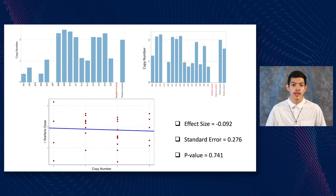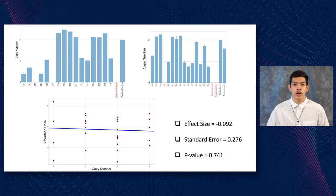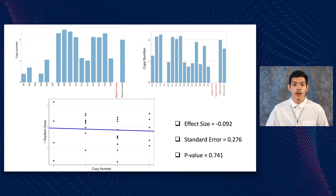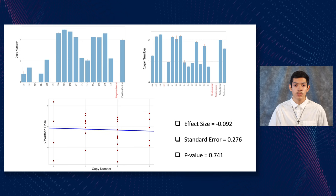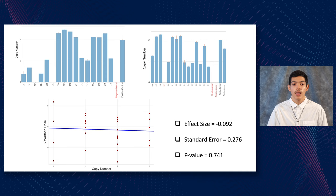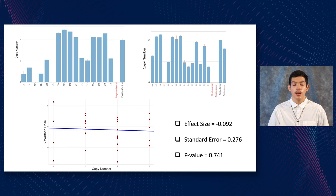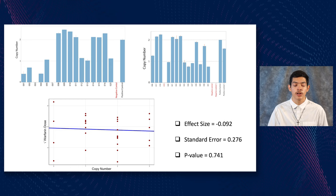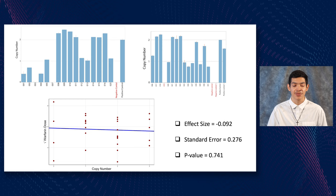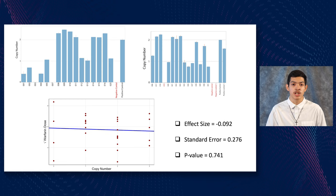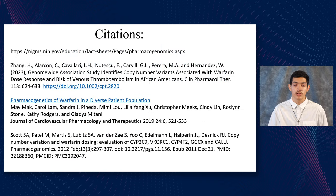Previous studies found that genetic variants influence warfarin dosing, but not many have looked at copy number variation, or CNV — where a segment of DNA is either deleted or duplicated. We used extracted DNA from a Hispanic and Latina cohort under warfarin and performed copy number analysis using CopyCaller software. The results showed copy numbers varied greatly across samples, but after our calculations and linear regression, we found that copy number alone at our region of interest on chromosome 6 cannot be used to predict warfarin dosing.